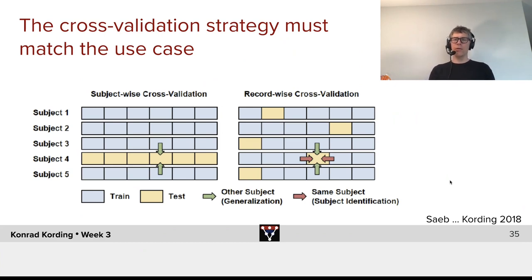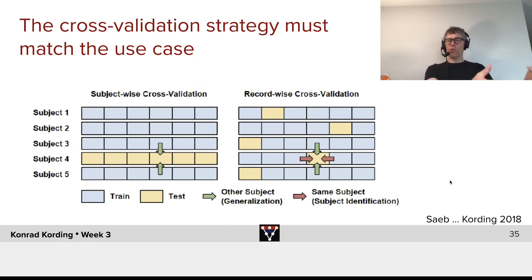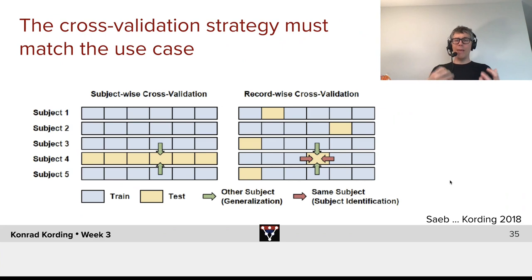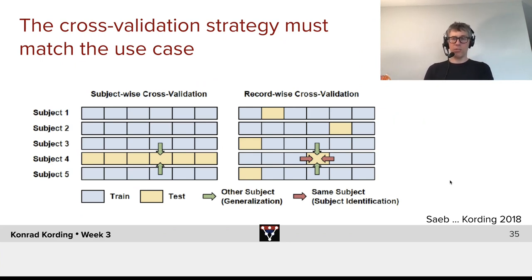The right way of doing cross-validation matches the medical use case scenario. Say I recruit a hundred people and want to figure out how they feel based on their phone. The medical use case is: I recruit volunteers, collect data from their phones, then build code for clinical rollout. When I do the rollout, I will not have the ability to retrain on that person — I will just train on other people. So to match this situation, I always want to train on other people and test on new people I haven't seen before. This is called subject-wise cross-validation. However, it's very expensive because we need a hundred-some people.